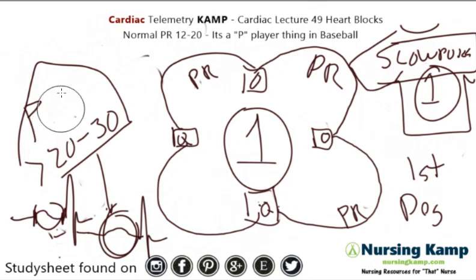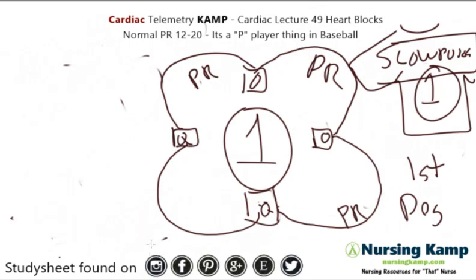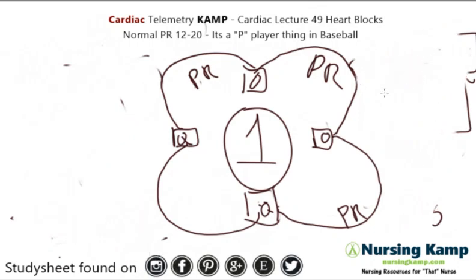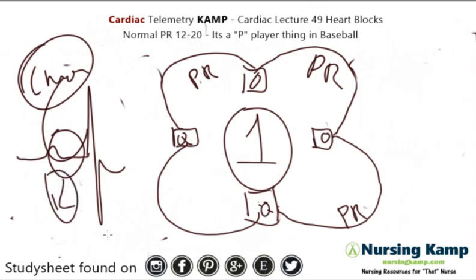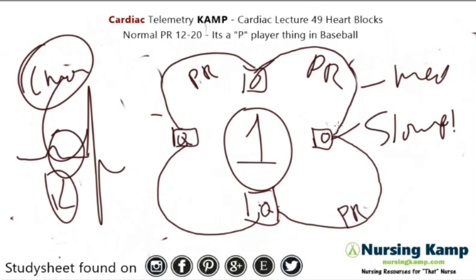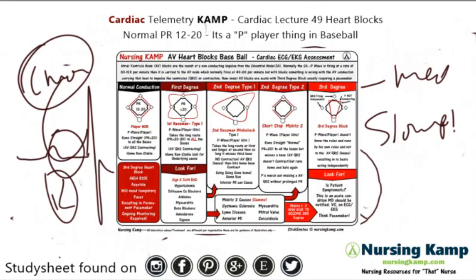The big thing to recognize with heart blocks: on a first degree heart block, there's nothing really wrong as far as acute management — you treat the underlying cause, whatever might be causing it. Remember that a prolonged PR is on the chronic side. It could be potassium, or medications, or something like that. But there is conduction going on. So the first baseman is a Slowpoke, and that's first degree heart block. Next time we'll cover second degree heart block. I can be followed on Instagram, Facebook, Pinterest, Etsy, and NursingCamp.com.